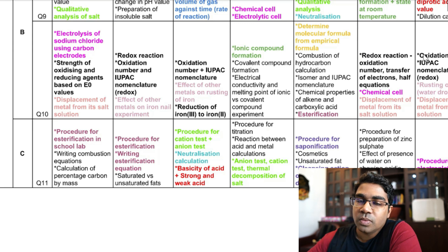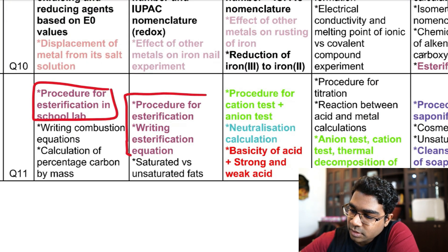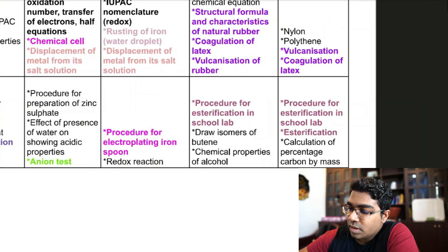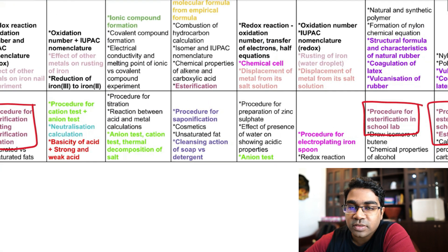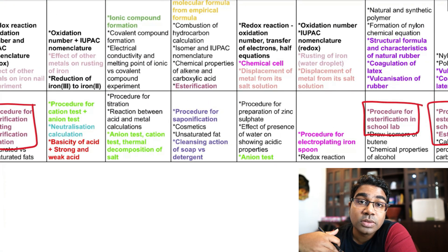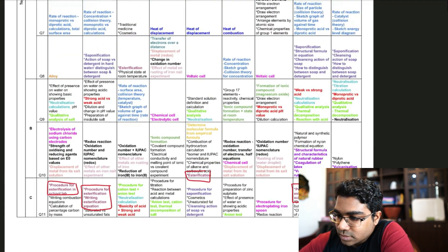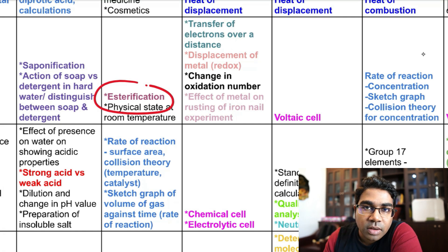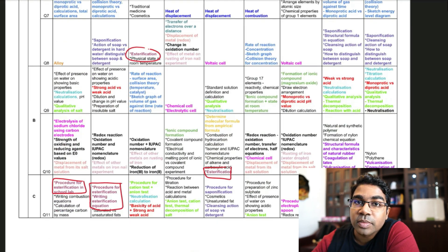For Section C, the topic that is very common is esterification. Two states have esterification, and it is also a topic that keeps recurring overall. They will usually ask esterification in combination with the chemical properties of alcohol — because alcohol can be oxidized to carboxylic acid, and then carboxylic acid together with alcohol is what forms an ester under esterification. So esterification is another topic worth looking into.